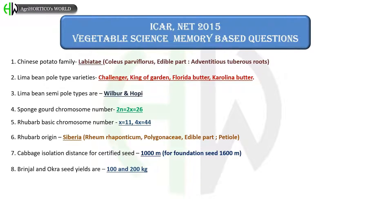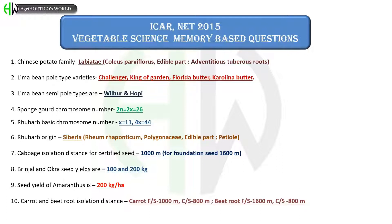Cabbage isolation distance for certified seed is 1000 m, and for foundation seed is 1600 m. Brinjal and okra seed yields are 100–200 kg per hectare. Seed yield of amaranthus is 200 kg per hectare. Carrot isolation distance: for foundation seed is 1000 m, for certified seed is 800 m. Beetroot isolation distance: for foundation seed is 1600 m, and certified seed is 800 m.